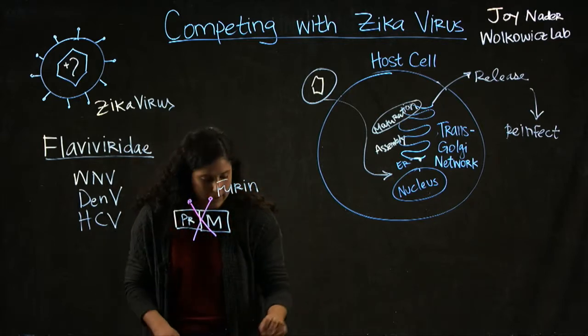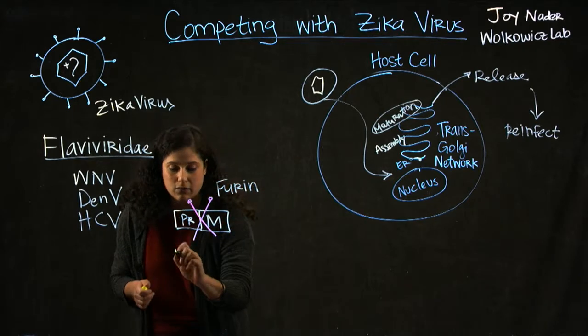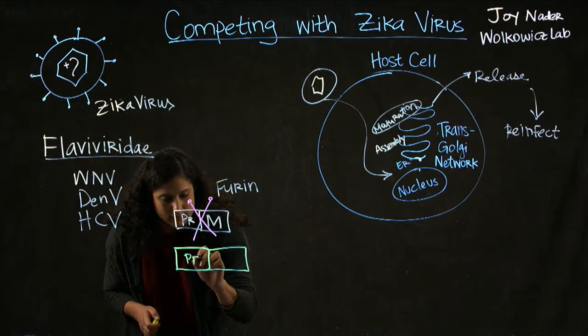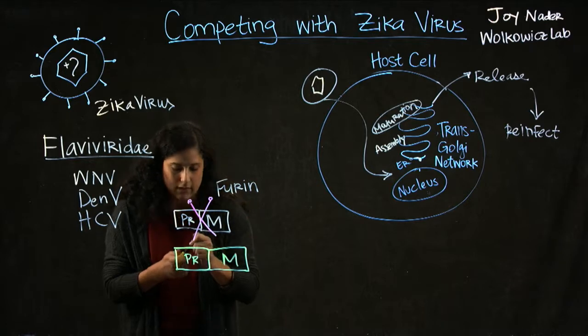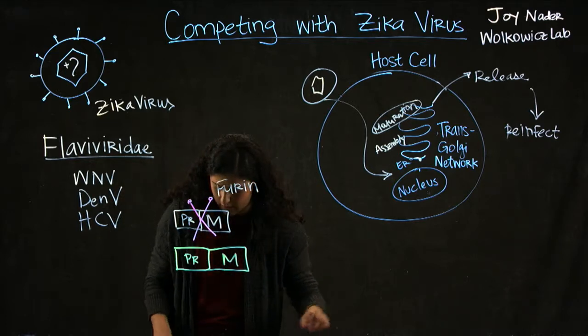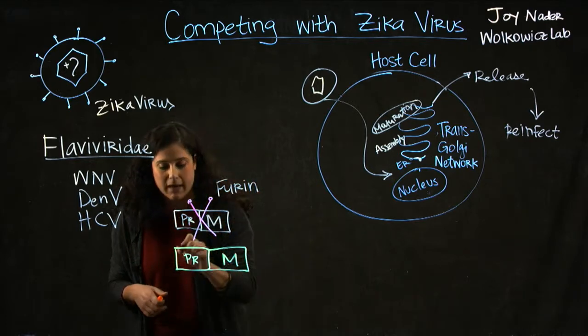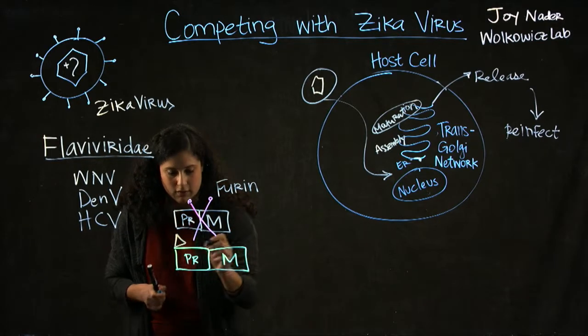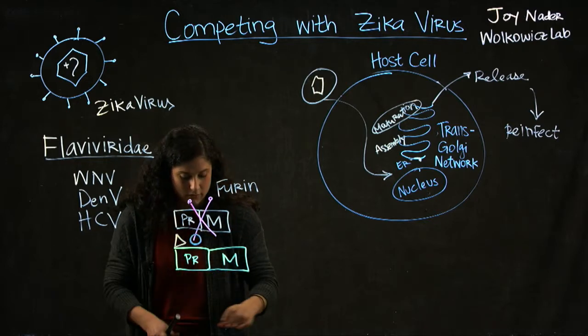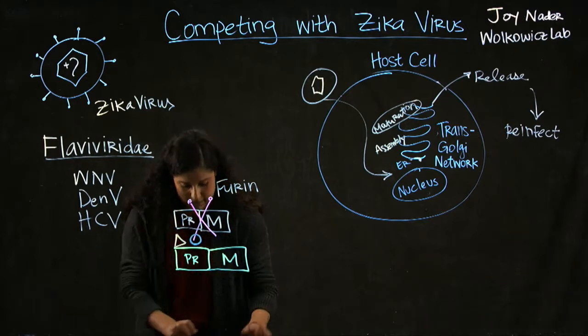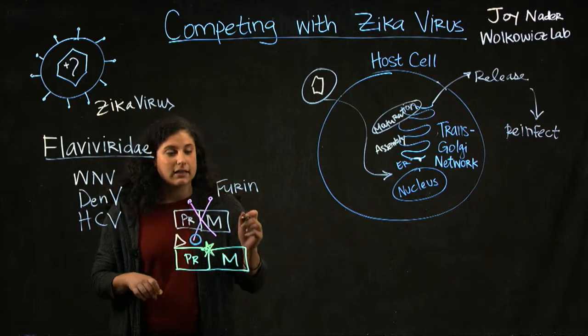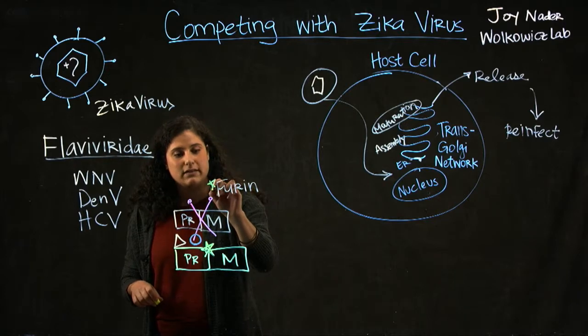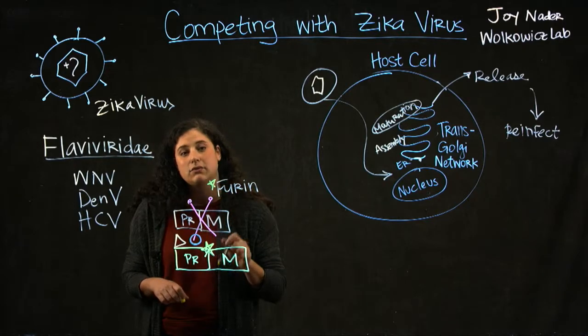We are looking at different ways to screen for competitors for this cleavage process. If we can find different chemical compounds—compound A, B, or C—that can either outcompete for the cleavage site or compete with Furin itself, we can prevent this cleavage from happening.